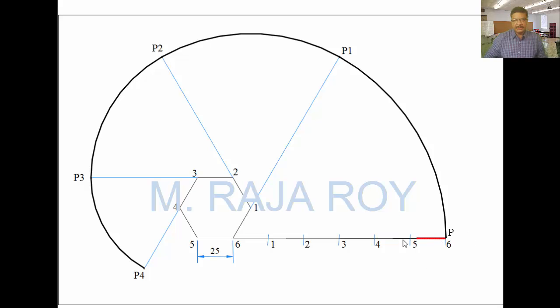Next, take P to 5 distance. Mark the distance after 5 like this. This point is P5. Now, take 4 as center up to here as radius, draw an arc. Then, take P5 as center, draw an arc like this up to here. Now, involute is completed.